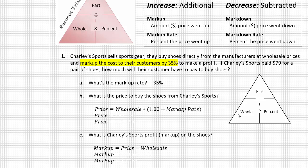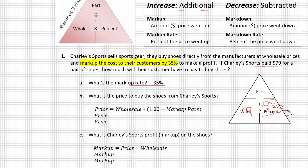We have our triangle here, so let's work our way through it. The wholesale amount is going to be in the "whole" section — that's 100%. The total is the $79 that Charlie Sports pays. We are also given the percent, which is the 35% markup. Since it's an addition, it's 100% of what Charlie Sports pays plus 35% additional — a markup — for a total of 135%. That's what the customer is going to pay: 135% of what Charlie Sports pays originally.